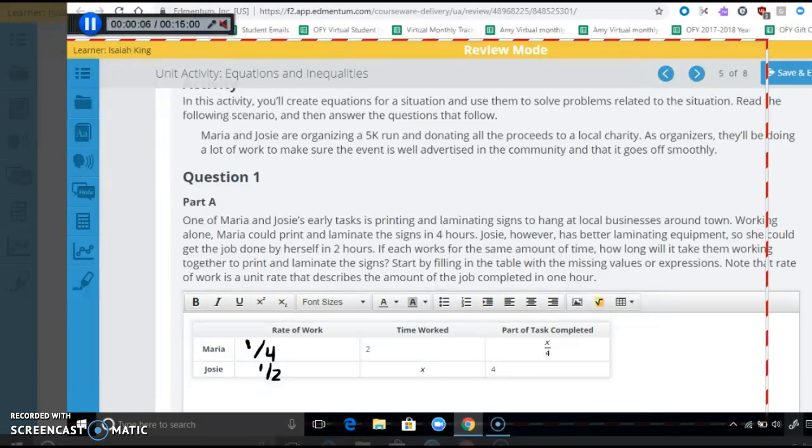Now time works, this is the time they're working together. Now that's something we don't know. So this is correct, x here, and it's also x here. And so for the part of the task, we're just going to multiply their rate times time. So we get one-fourth times x, which is exactly what you have, x over four. Same thing here, one-half times x, which is x over two. So that's their task that they have completed.